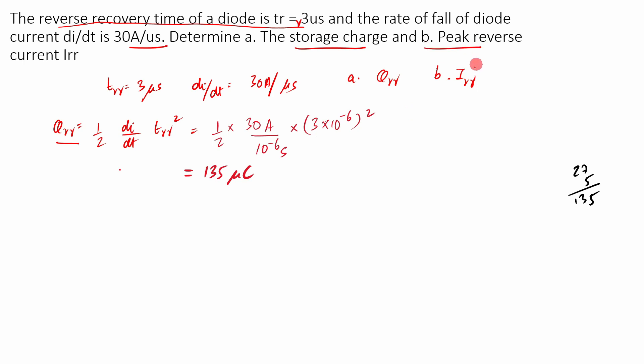So the second part of the question was to find out the reverse recovery current. So the reverse recovery current, you just derived the equation that is equal to root of 2QRR into (di/dt). So you have already found out what is the value of the reverse recovery charge that is QRR in this equation, sorry in this numerical will be equal to 135 microcoulombs. And (di/dt) is already given in the numerical that is equal to 30A per microsecond.